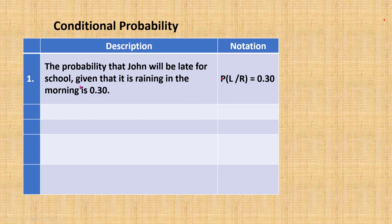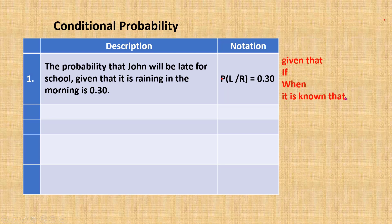We can identify conditional probability based on the keyword 'given that'. Other than 'given that', sometimes we will be given the keyword 'if', 'when', 'it is known that', or some other similar keyword.